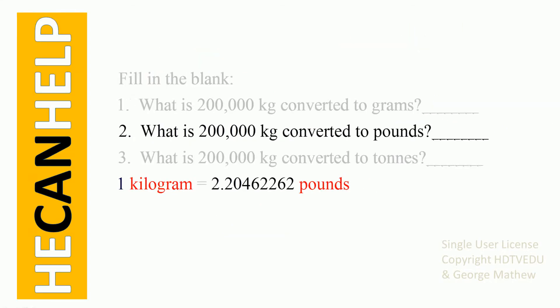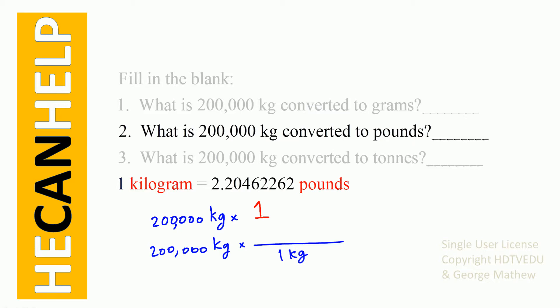Number two: what is 200,000 kg converted to pounds? We multiply 200,000 kg by 1, and what is 1 kg equal to in pounds? It is 2.20462262 pounds. So we replace 1 with 2.20462262 pounds over 1 kg. Immediately you see that kg and kg cancel out, so you get your answer in pounds.